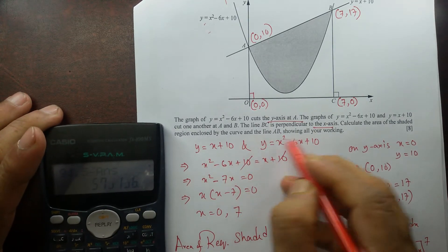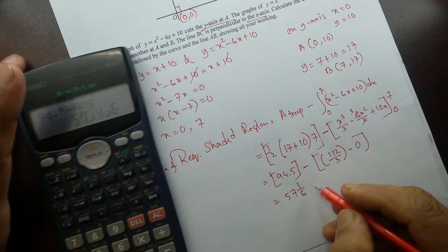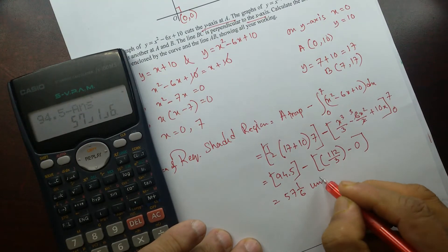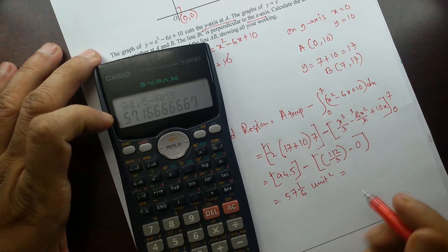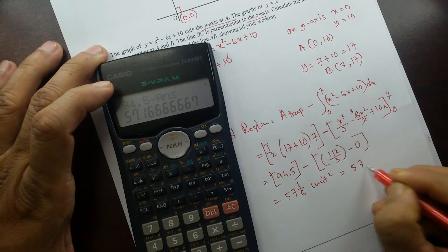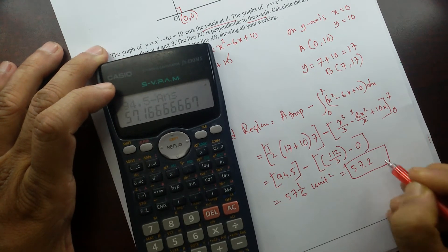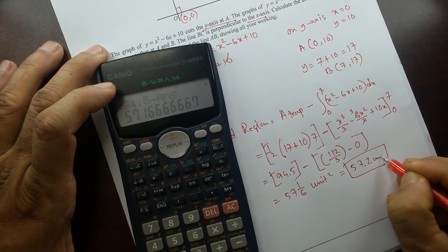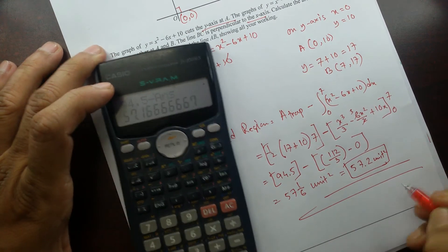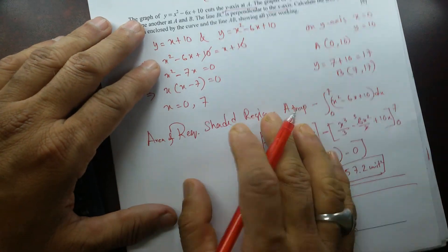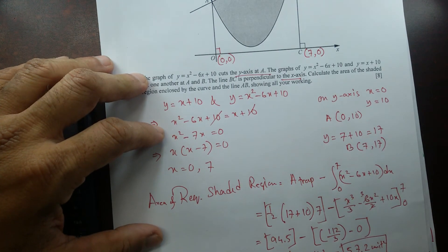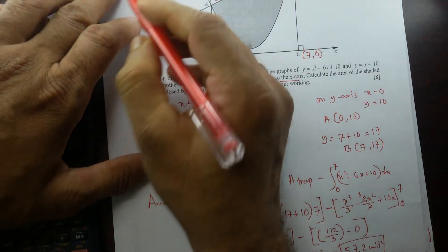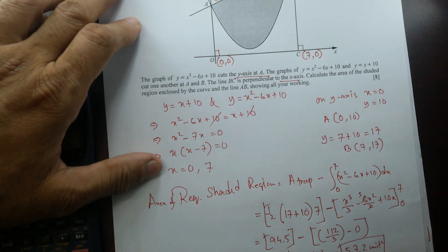The question didn't specify centimeters, so the answer is in square units: 57 and 1/6 square units, or 57.2 square units to three significant figures. I hope you understand this. If you have any questions, leave them in the comment box and I'll get back to you. And I haven't finished — I'm going to go on to question number 9.